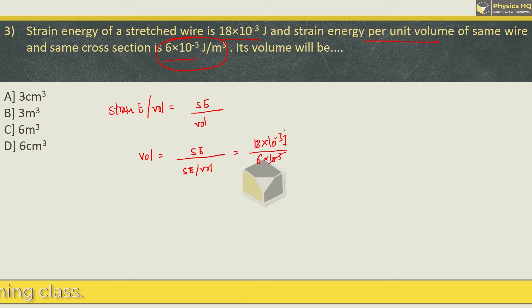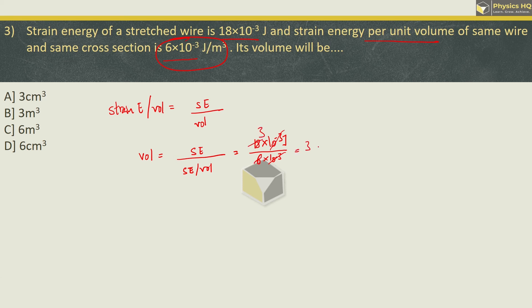So the volume that we get over here is 3 meter cube. The correct option is option B.